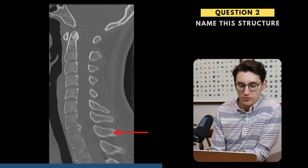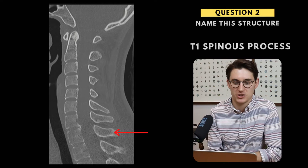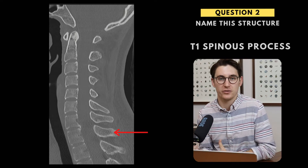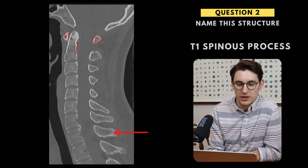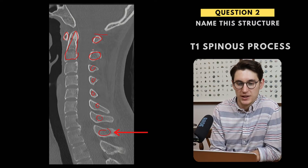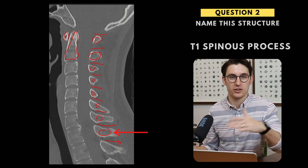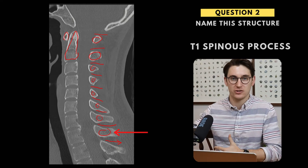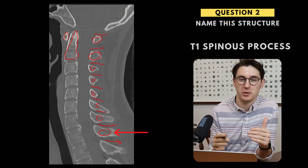Question two. What we have here is our T1 spinous process. The reason I've chosen this image is because people often get confused with the number of cervical vertebrae versus the cervical nerve roots. We've got seven cervical vertebrae: C1 the atlas, C2 the odontoid or dens, C3, 4, 5, 6, 7, and then it turns into T1. Our nerve roots start as C1, 2, 3, 4, 5, 6, 7, C8, and then T1. From the thoracic vertebrae down, nerve roots are below the corresponding vertebrae, whereas in the cervical region, the C1 nerve root is above the C1 vertebra and so on. So there are not eight cervical vertebrae, but there are eight cervical nerve roots.